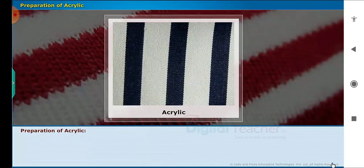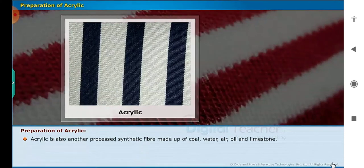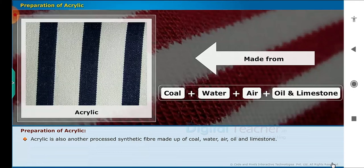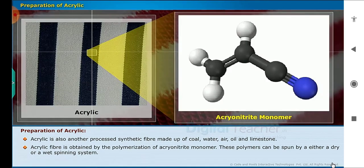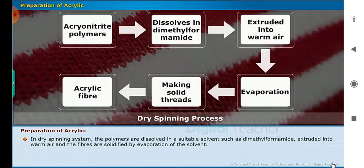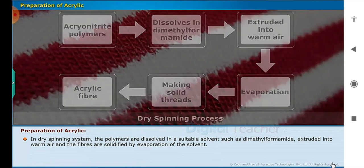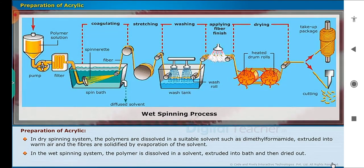Let us now discuss how acrylic is prepared. Acrylic is another processed synthetic fiber made up of coal, water, air, oil and limestone. Acrylic fiber is obtained by the polymerization of acrylonitrile monomer. These polymers can be spun by either a dry or a wet spinning system. In the dry spinning system, the polymers are dissolved in a suitable solvent such as dimethyl formamide, extruded into warm air, and the fibers are solidified by evaporation of the solvent. In the wet spinning system, the polymer is dissolved in a solvent, extruded into a bath and then dried out.